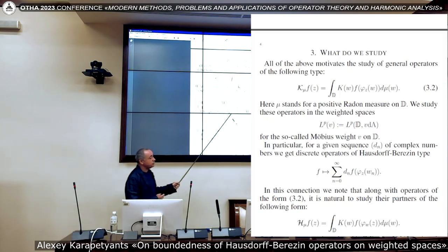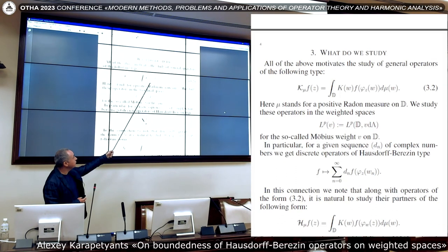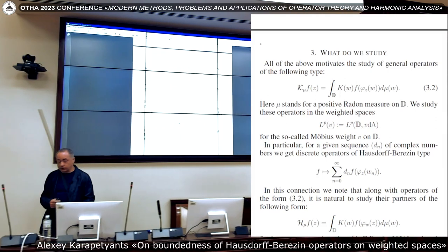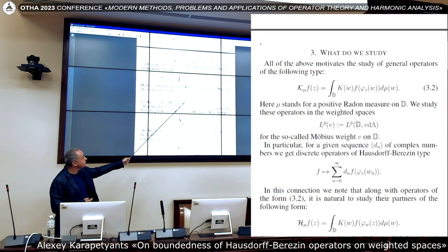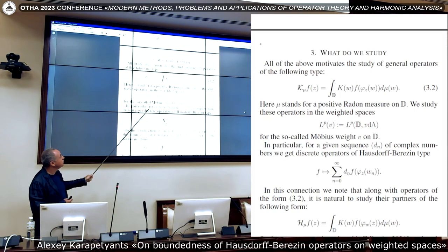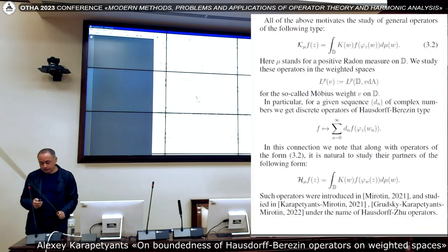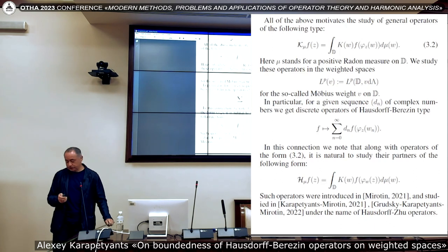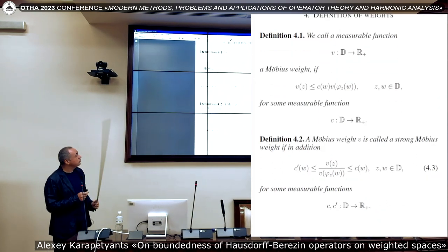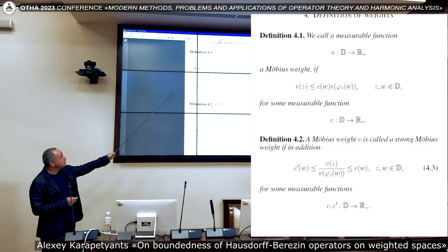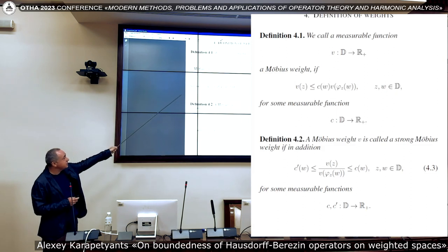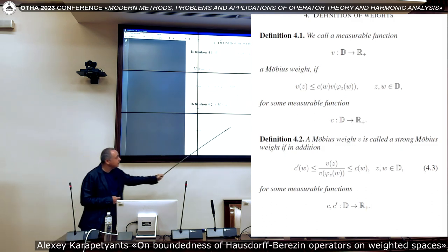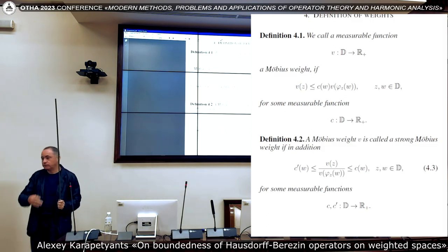So exactly here, next step of generalization, we have this general kernel and we have this positive Radon measure on the unit disk. And also, we studied these operators within the weighted space with certain weights that we called Möbius weights. At this point, I think this is the most general case people studied regarding these operators. So, Möbius weights. What are the Möbius weights? We will call function V to be a Möbius weight if there exists a measurable function C such that this inequality holds. And we say that this is a strong Möbius weight when you have the bounds from both sides, from up and from below.